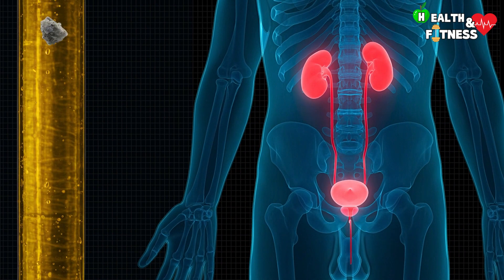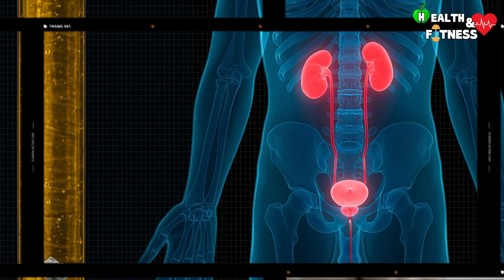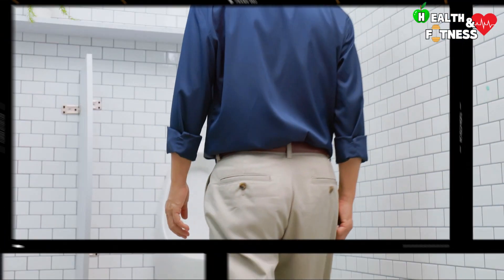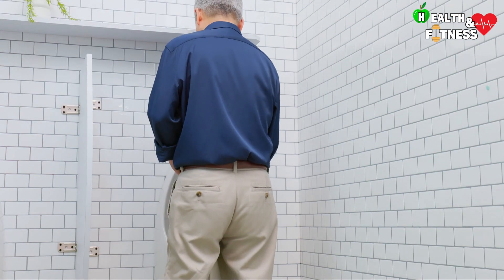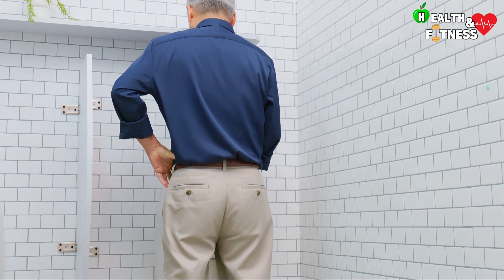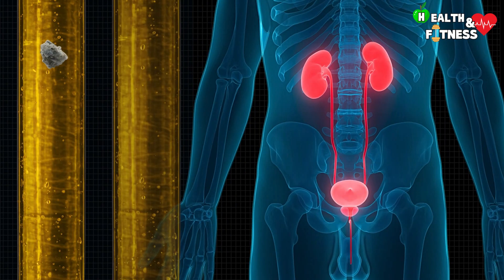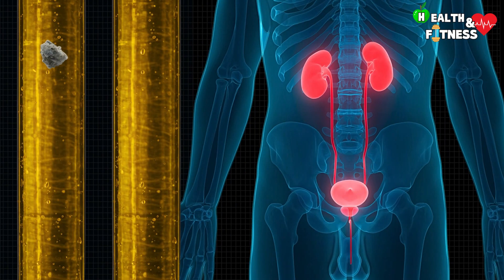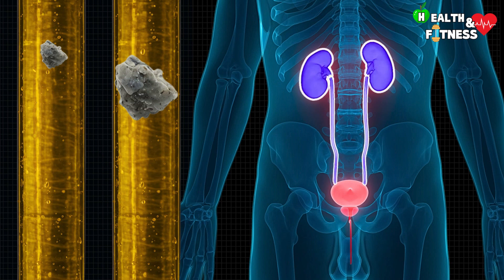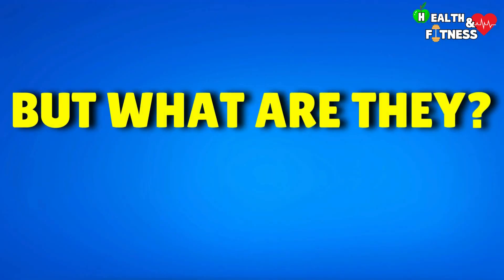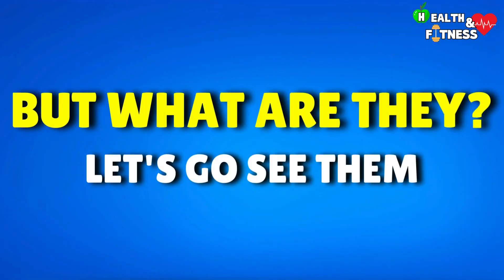Generally, small kidney stones are asymptomatic and can go unnoticed, as they are expelled independently and painlessly during urination. However, if they reach larger dimensions, they can settle inside the kidneys or move along the ureters until they reach the bladder, causing the onset of some symptoms. But what are they? Let's go see them.